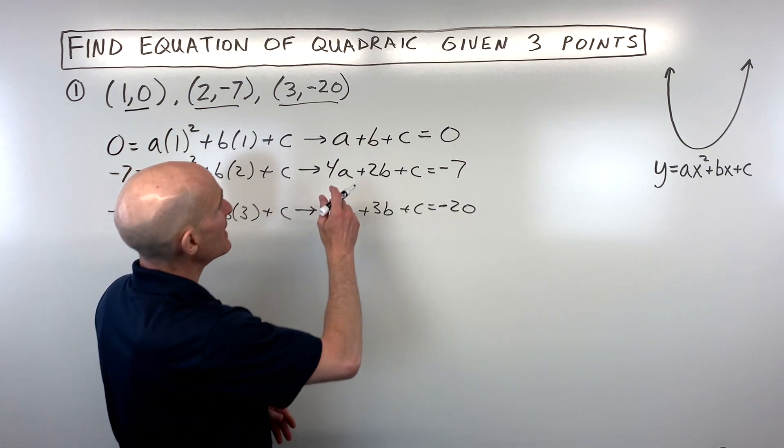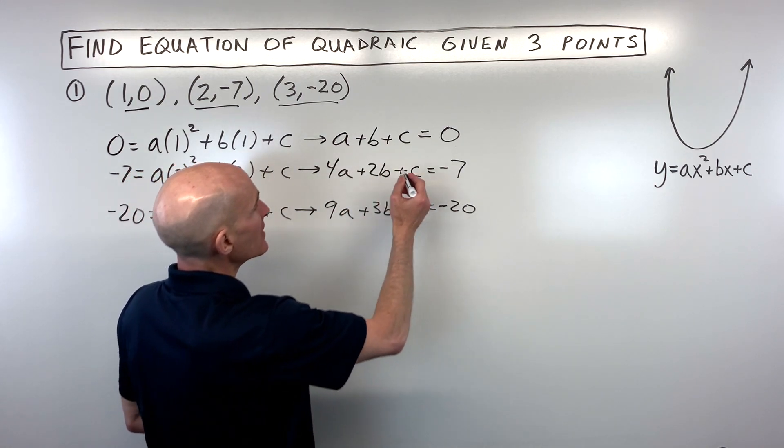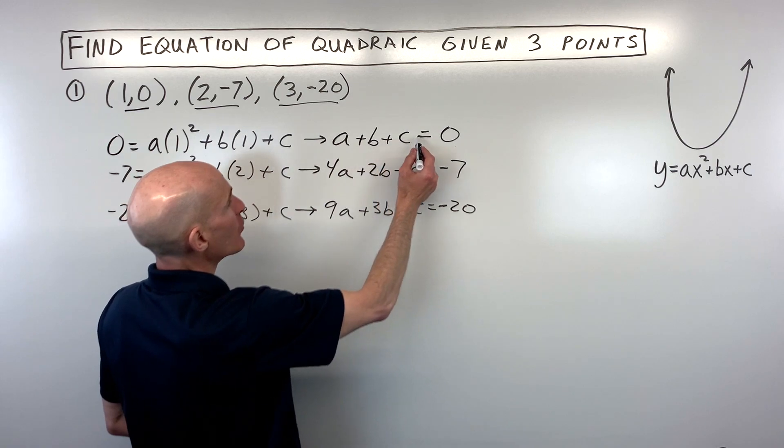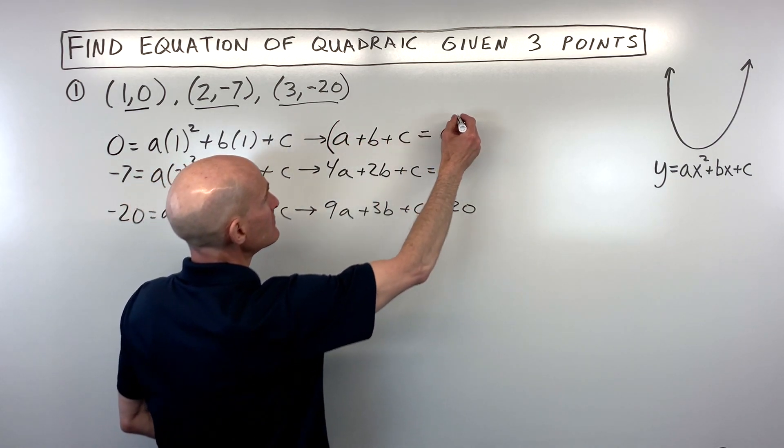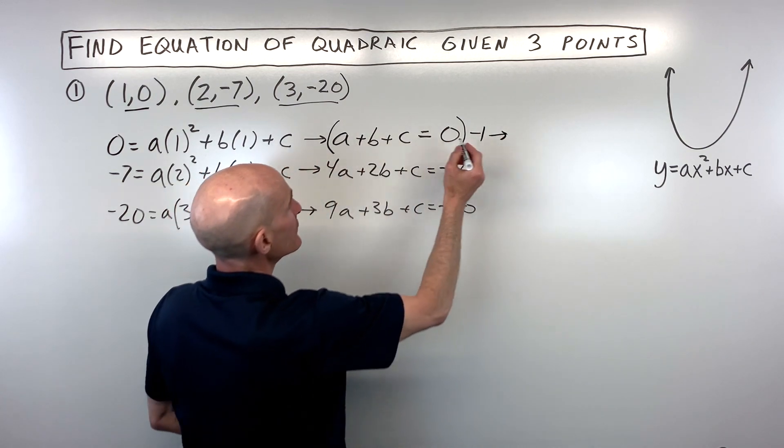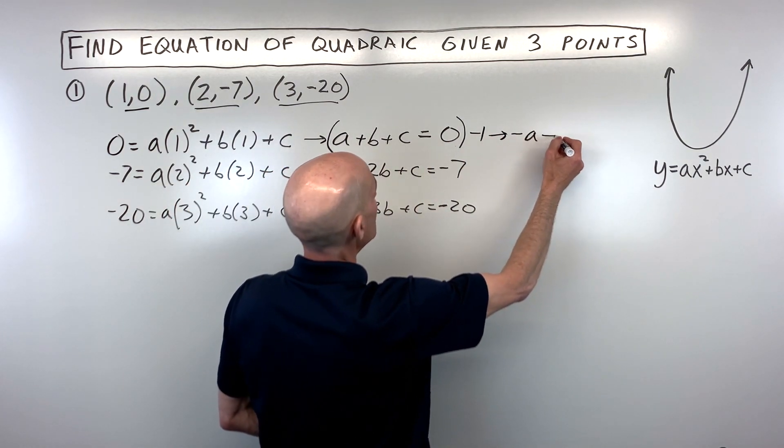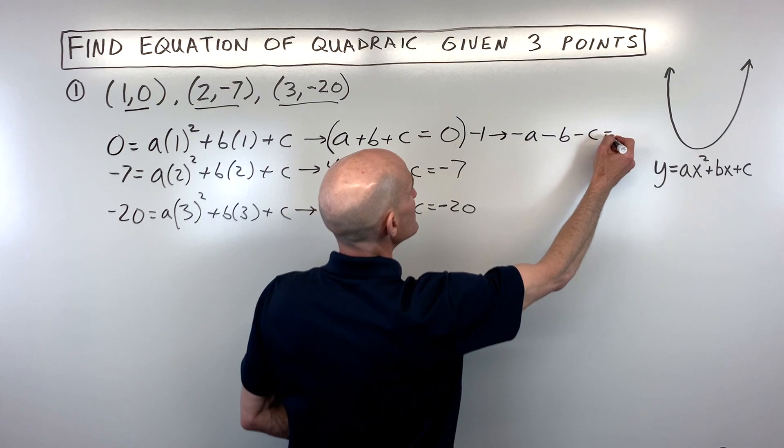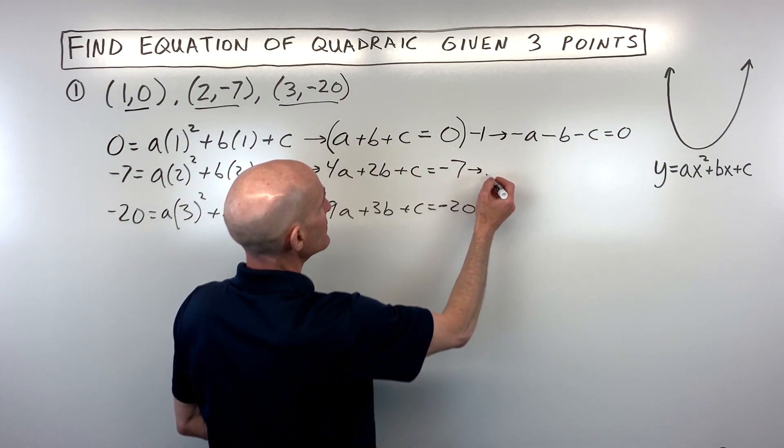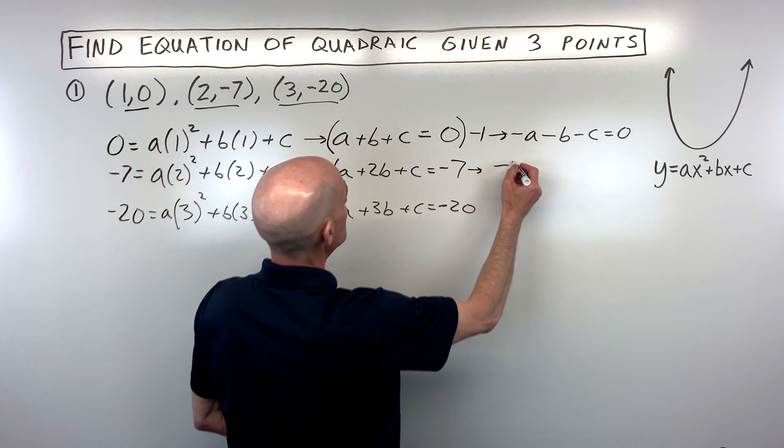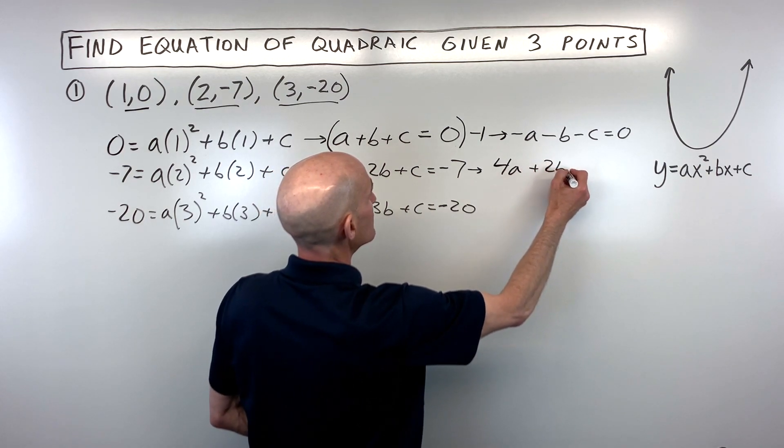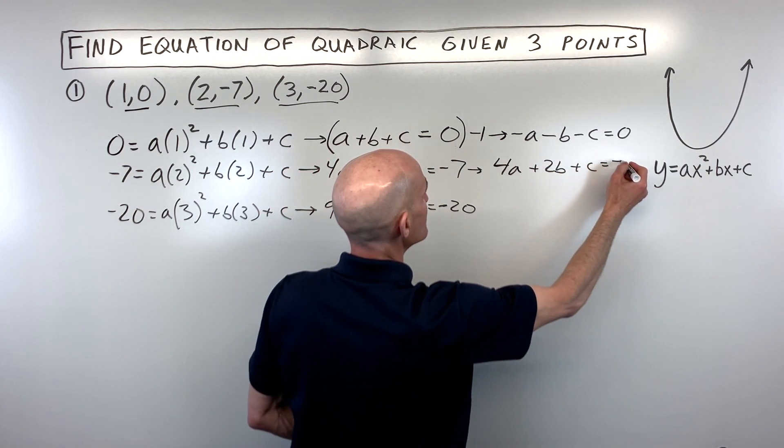And what I'm going to do is I'm going to take these first two equations here. And what I'm going to do is I'm going to multiply this top equation by negative one. And the reason I'm doing that is that's going to flip the signs here. It's going to make this negative a, negative b, negative c, and zero times negative one is still zero. This equation here, I'm just going to keep it just like it is. So that's going to be 4a plus 2b plus c equals negative seven.